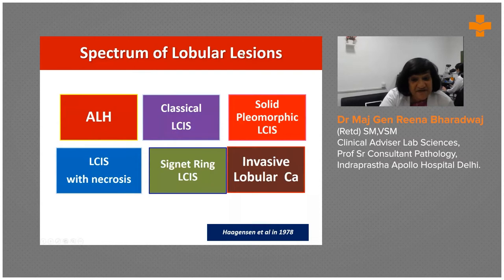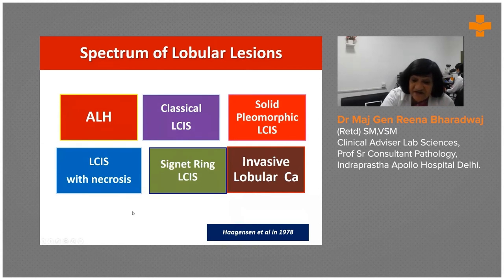This spectrum, as you must have read, not only includes ALH but various types of lobular carcinoma in situ: the classical, solid, pleomorphic, with necrosis, and signet ring types. We will be covering these quickly so that we know how to recognize them and how not to mistake them.